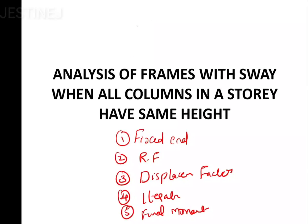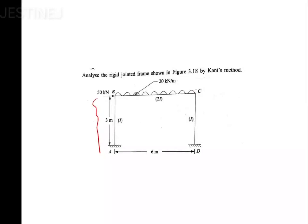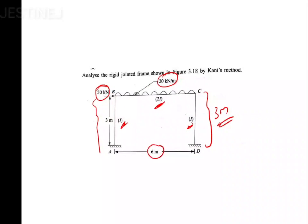We will discuss what 'all columns in a story having same height' means while doing problems. Now we move on to today's topic: analyze the rigid frame using the Kanis method. Here you can observe the height of this frame is three meters on both sides, so both heights are the same. A 50 kilo-newton point load is acting, and a 20 kilo-newton per meter UDL is acting over span BC. The moment of inertia is I for AB and CD, 2I for BC, and the span is six meters.